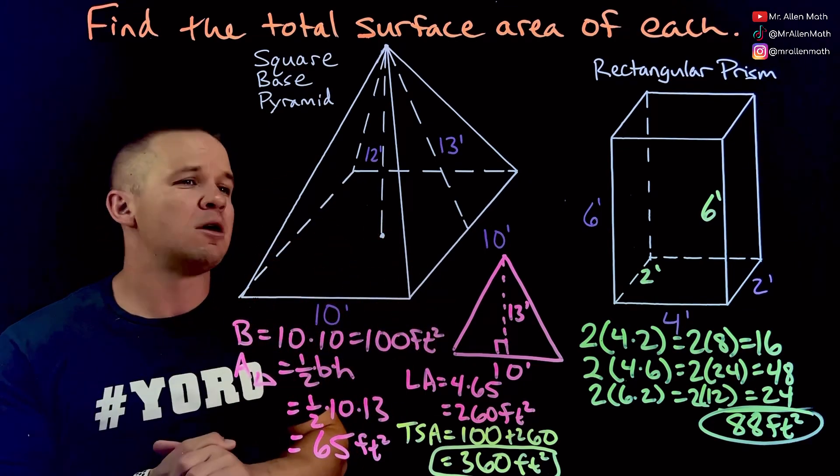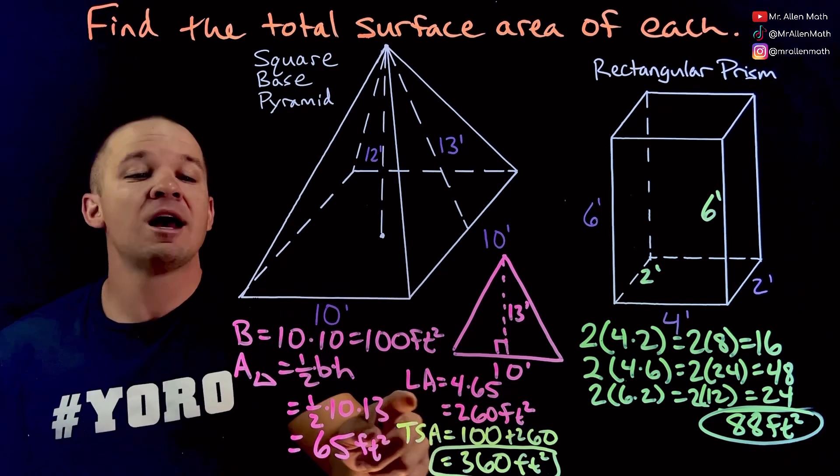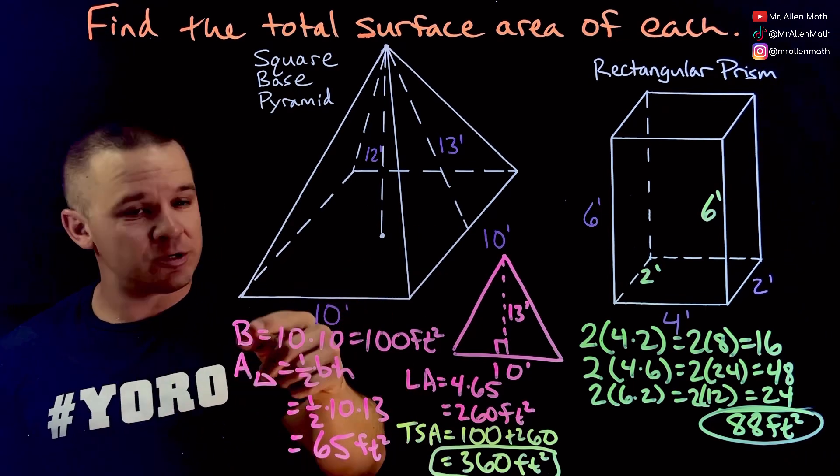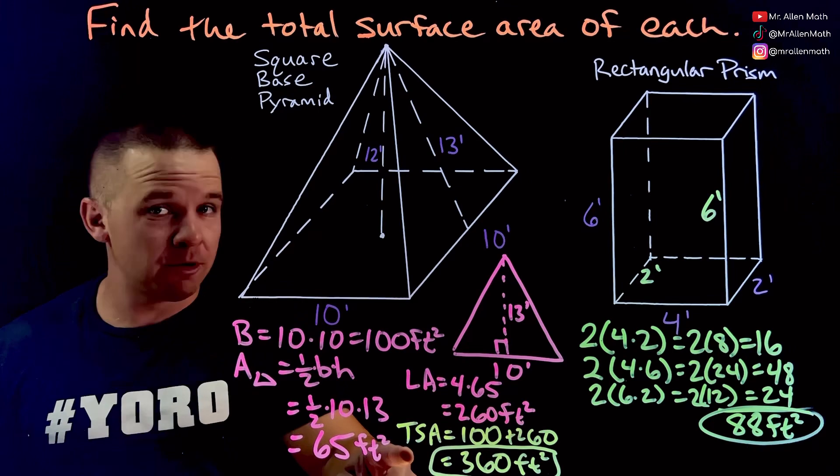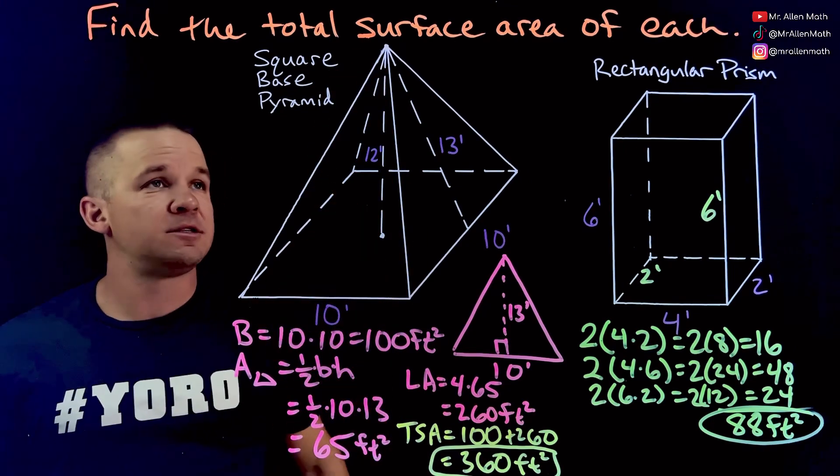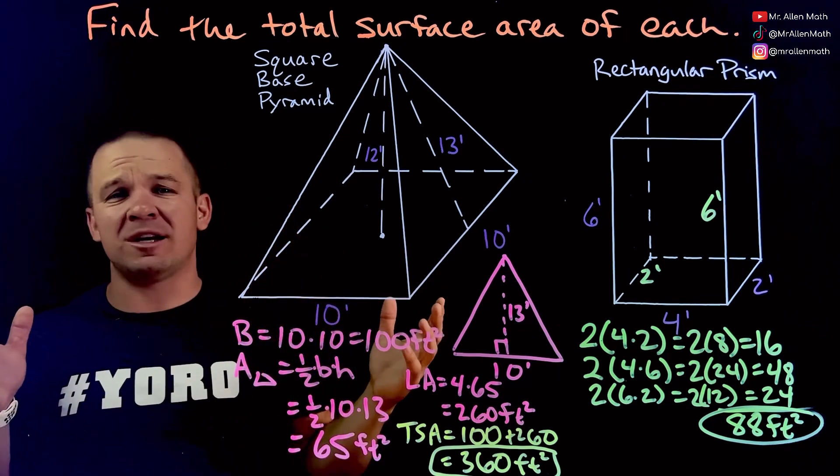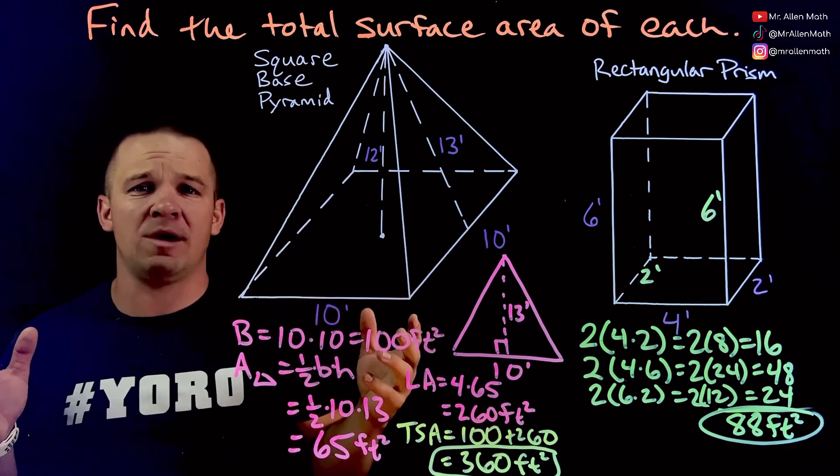With square base pyramid it's the triangles, that's the lateral area, hence why I put LA, and the square there is our base which is why I got big B, making the total surface area when I add them together. Yes, yes, that's dope man, awesome, fantastic, wonderful. Have a fantastic day and enjoy finding some more total surface areas if you're getting after it right now. See ya!